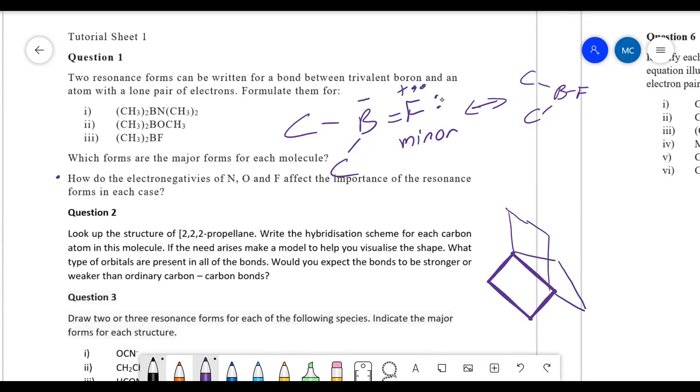Here you are asked to write the hybridization scheme for each carbon atom in the molecule. If the need arises, make a model to help you visualize the shape. What type of orbitals are present in all of the bonds? Normally when you have single bonds, you have sp3 hybridization, but in this case this is not possible. It would be too strained as a structure.